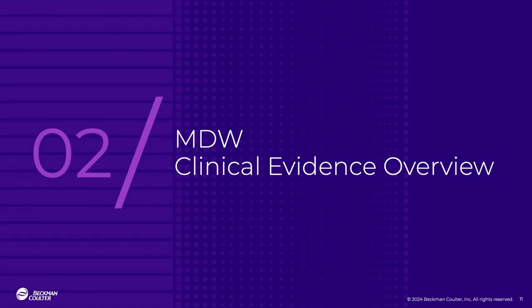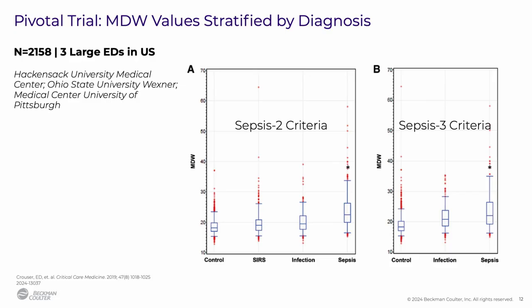Let's review the clinical evidence that shows how MDW reliably stratifies sepsis risk. Several clinical trials have demonstrated that MDW values increase with patient acuity. These box and whisker plots derived from the US pivotal trial data that supported the FDA clearance show that patients were successfully stratified by diagnosis under sepsis 2 criteria and sepsis 3 criteria. Under both paradigms, increased median MDW values correlate with infection, and the cutoff of 20 differentiates sepsis and serious infection from other lower risk patients.